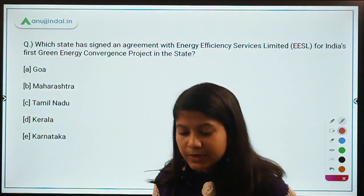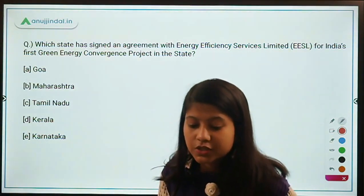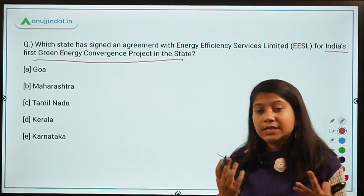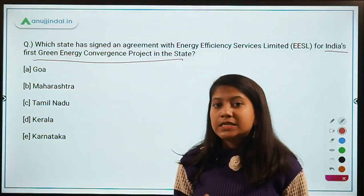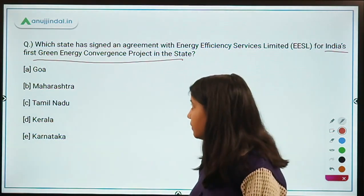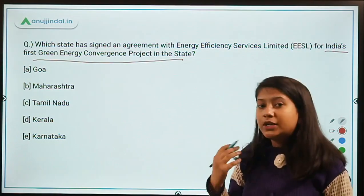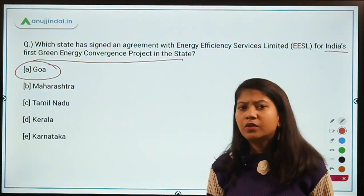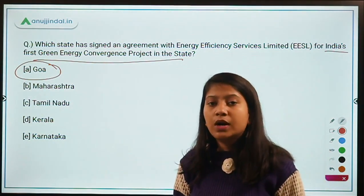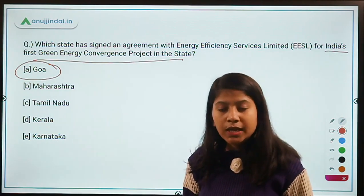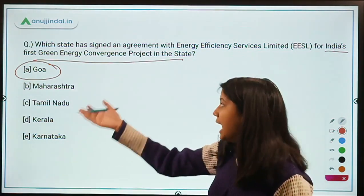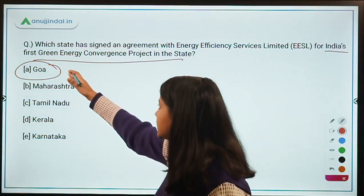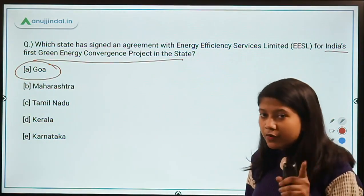Which state has signed an agreement with Energy Efficiency Services Limited for India's first Green Energy Convergence Project? The answer is Goa. Goa does not produce any electricity on its own — it borrows all electricity from the central grid. To become self-reliant in electricity production, this first Green Energy Convergence Project in Goa has been launched. Remember these facts.